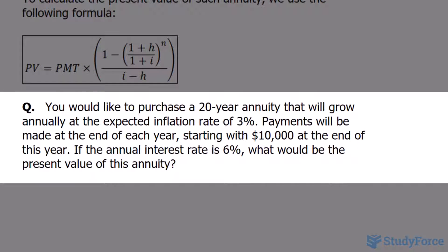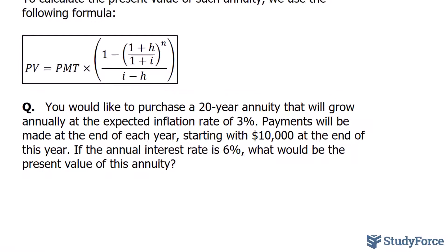You would like to purchase a 20-year annuity that will grow annually at an expected inflation rate of 3%. Payments will be made at the end of each year, starting with $10,000 at the end of this year. If the annual interest rate is 6%, what would be the present value of this annuity? The cash flow frequency of yearly corresponds to the compounding frequency of the interest rate, so we don't have to modify the interest rate in any way. The payments are also being made at the end of the year, so this is not an annuity due situation.